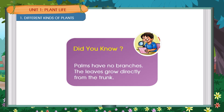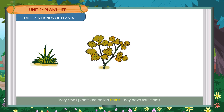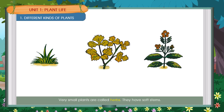These plants are called Herbs. They have soft stems. Examples include Grass, Coriander Leaves, and A Mustard Plant.